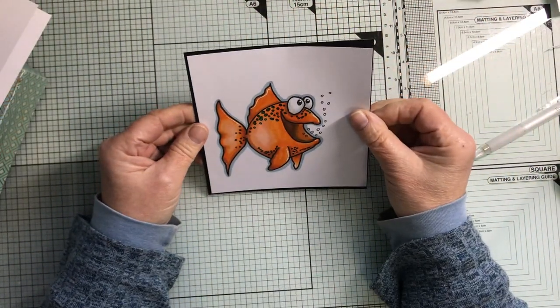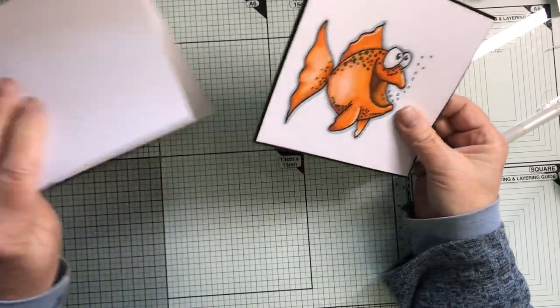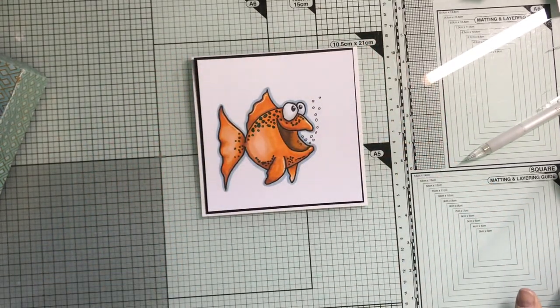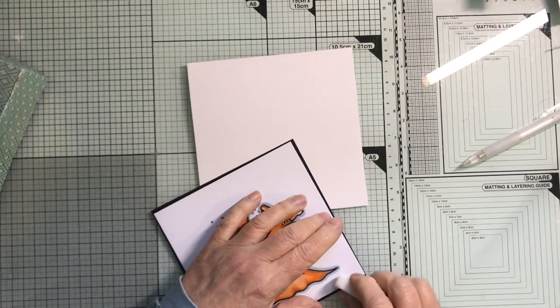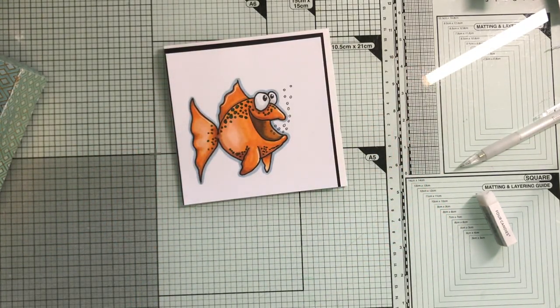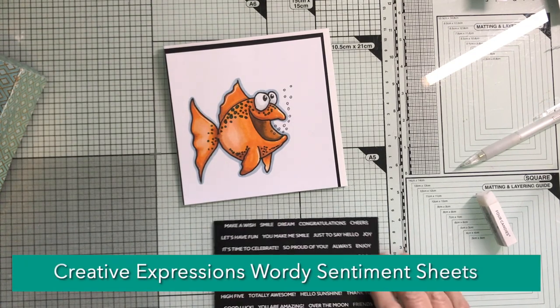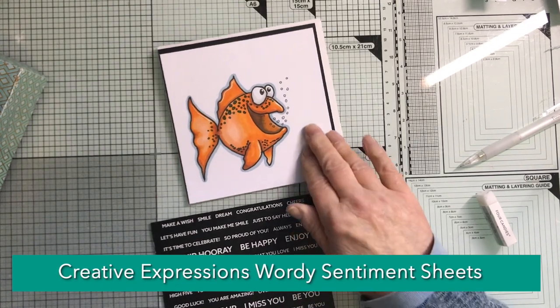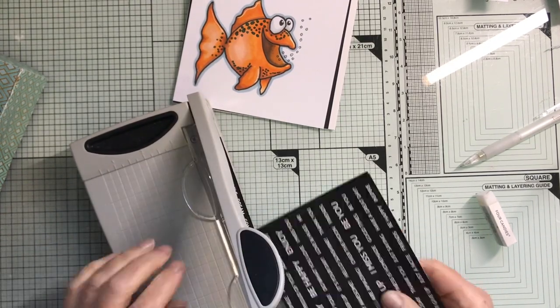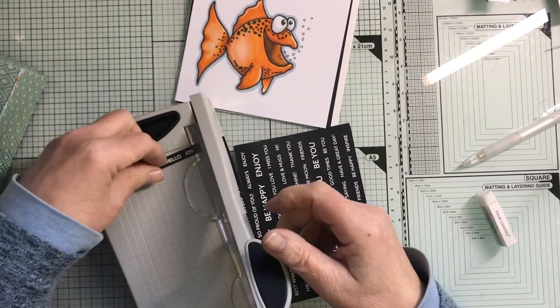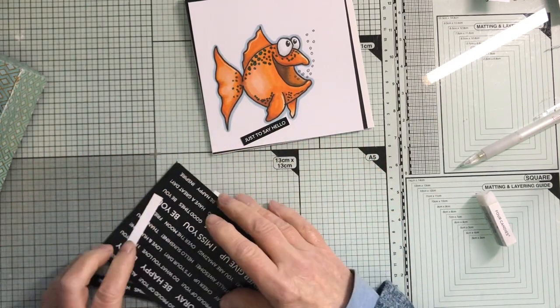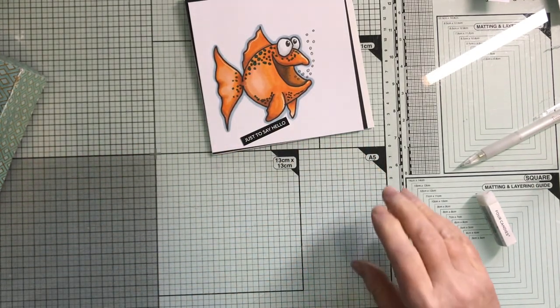I've done him at five and a half inches squared. The mat layer is five and five-eighths, and then five and seven-eighths for the blank. I've just got a bit of gunk on there. Let me look for a sentiment. I'm thinking of just to say hello. I think that sentiment might be a bit small, but I'm going to cut it anyway just to see. If I think it's too small I'll do something else. Oh, it might be okay. Let's get it stuck together and then see.